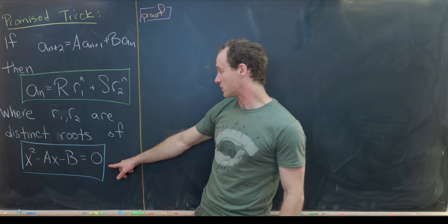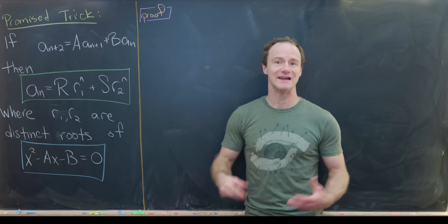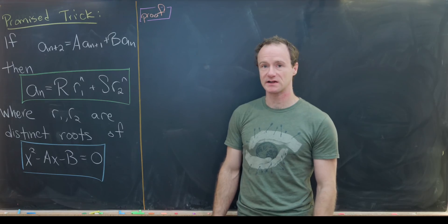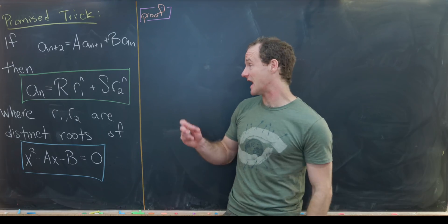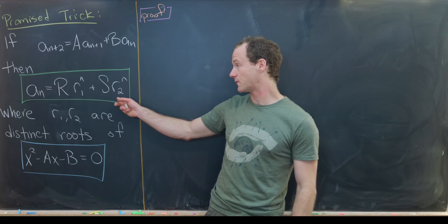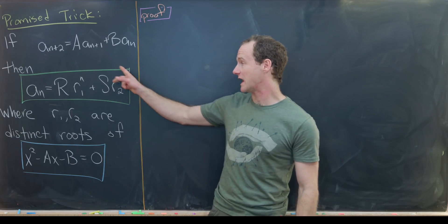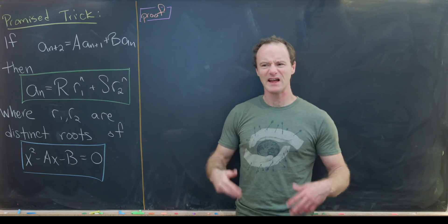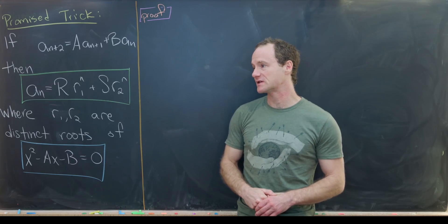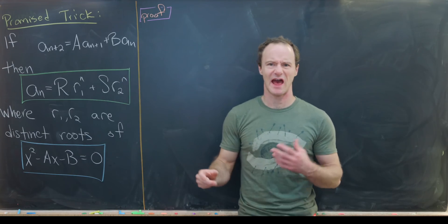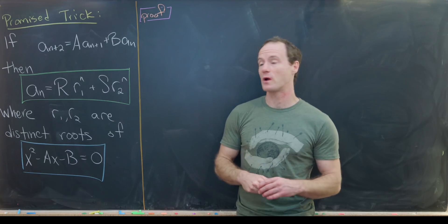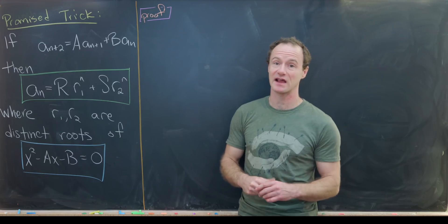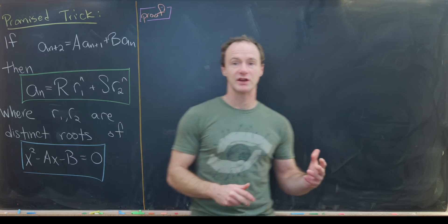A standard proof of this fact would start with an educated guess that the sequence has this closed form and then show any sequence with this closed form obeys the recursion. That's reasonable because obeying the recursion has a uniqueness property, but that's not the way we're going to prove this. To a fault, I like to do things constructively, and so we're going to use a generating function.